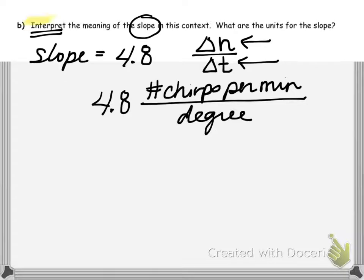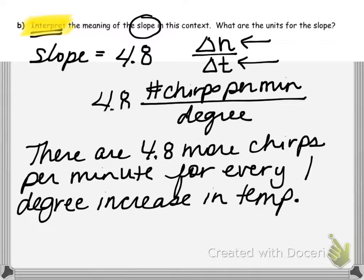When I ask you to interpret the meaning, that means we want to write a sentence explaining what this value of 4.8 actually means. If you think of 4.8 like 4.8 divided by 1, that means we get 4.8 more chirps per minute for every 1 degree increase in temperature. Another alternative way of writing this: you could say that the number of chirps per minute is increasing at a rate of 4.8 chirps per minute per degree.